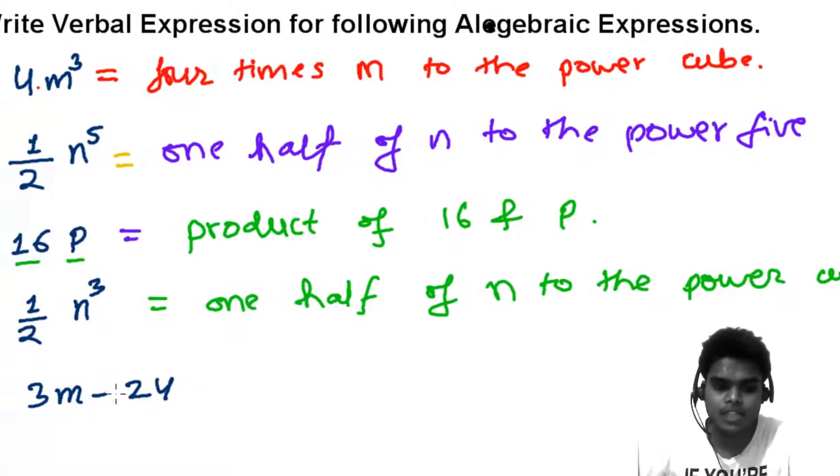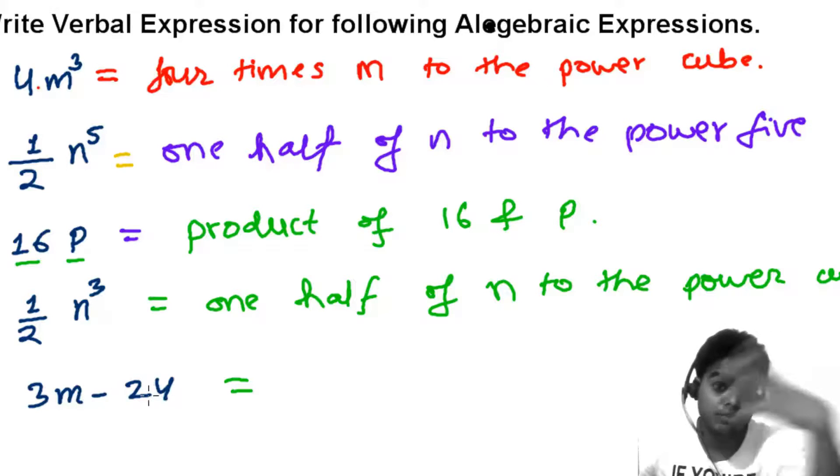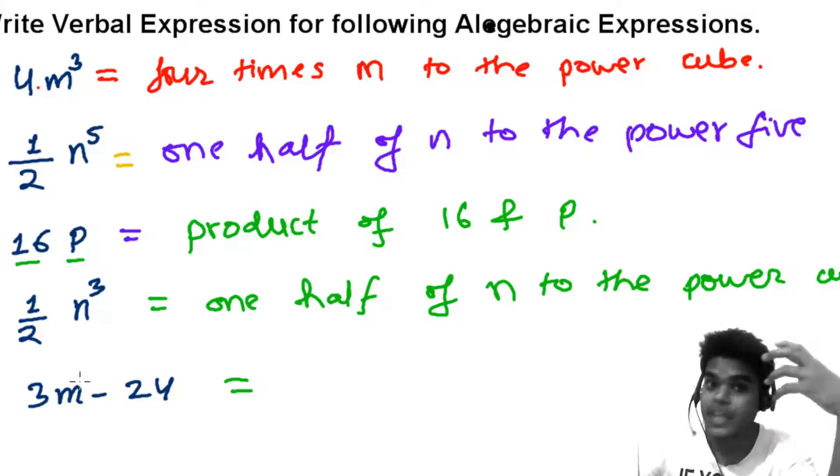Now, this is 3m minus 24. Okay, you can say 24 less than the product of 3 and m. You can also say 24 subtracted from the product of 3 and m. Okay, but you can also say the difference of the product of 3 and m and 24. Okay, so there are so many options for you.